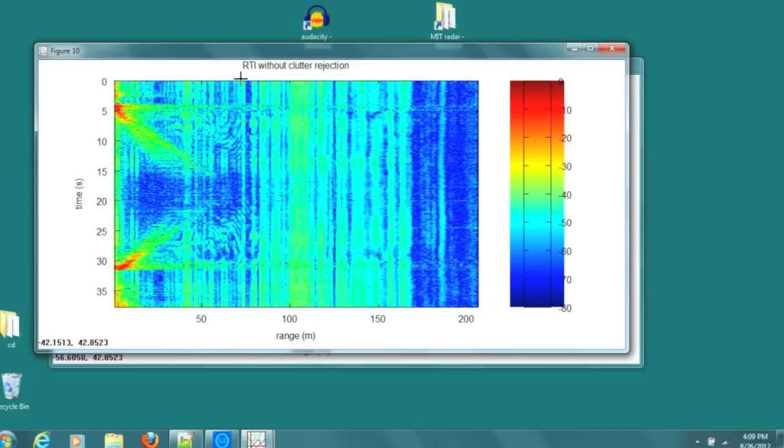You can see the results, a range-time-intensity plot. On the horizontal axis, you have range to your target, vertical axis. We have time, elapsed time from top to bottom. You see a general vertical grain here, a lot of vertical lines.